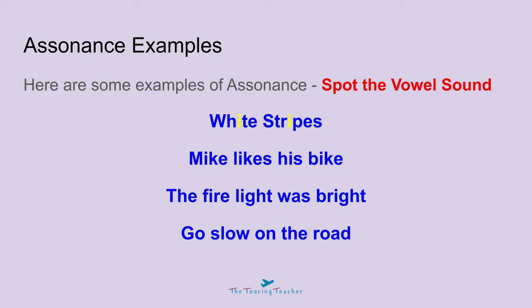We have the I and I in 'white stripes'. We have the I, I and I for 'Mike likes his bike'. We've got 'the fire light was bright' — we have the vowel sound of I again. And on the last one, we have the O's for 'go slow on the road'. So you are able to spot the vowel sounds in those examples.